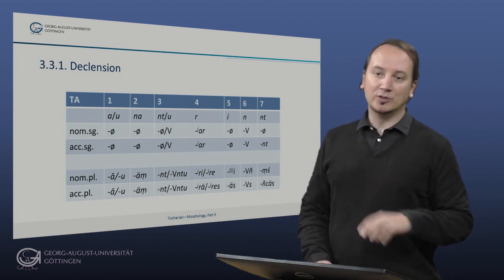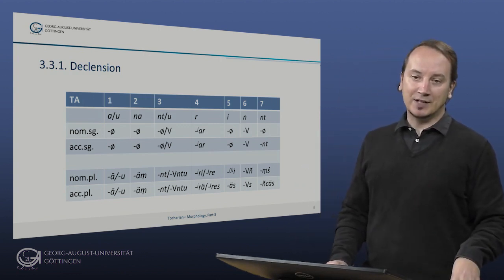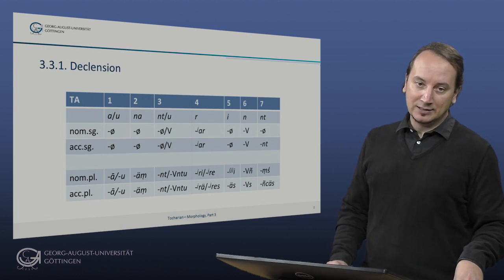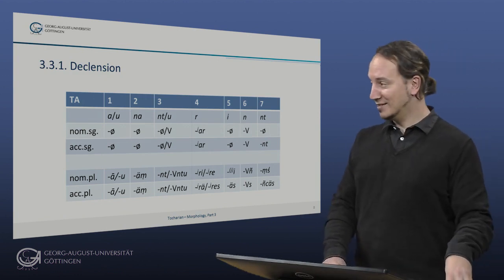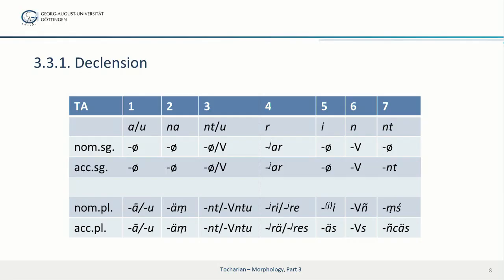Here now is a structural overview of the stem classes in Tocharian A that I let you digest for a moment. So I will not go over them like I did with Tocharian B. Let's just move on to a couple of examples.